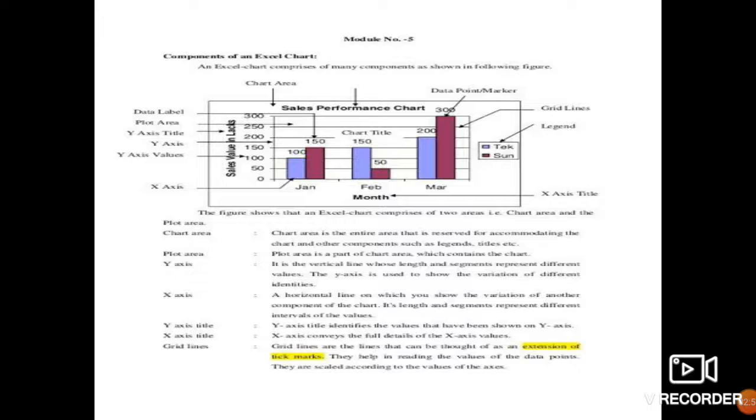Next is the legend. Legend means the name given to x-axis and y-axis. Suppose if we are creating a chart of our mark sheet, then what we will do? We will display subjects in x-axis and marks in y-axis. So subject will be the legend for x-axis and marks will be the legend for y-axis.